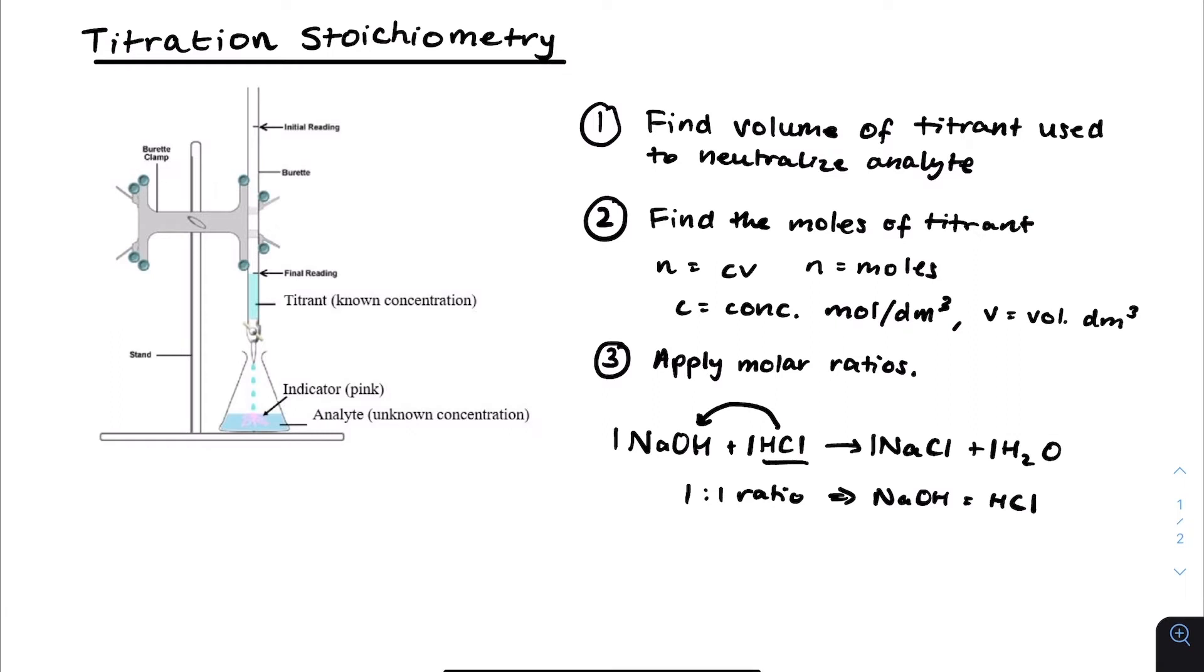However, if the HCl had a two in front of it and NaOH had one in front of it, that means that the molar ratio is one-to-two. And so the moles of NaOH should be half.